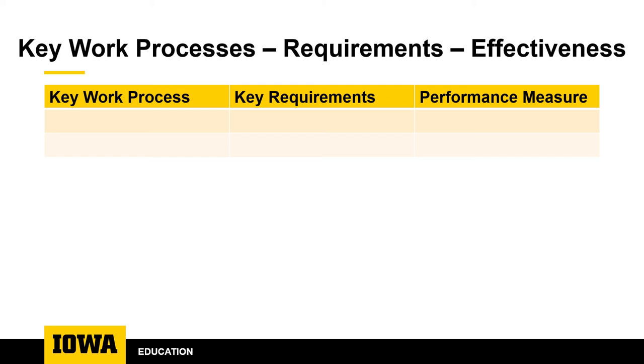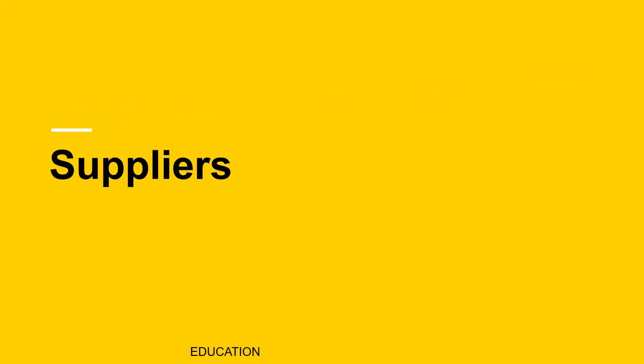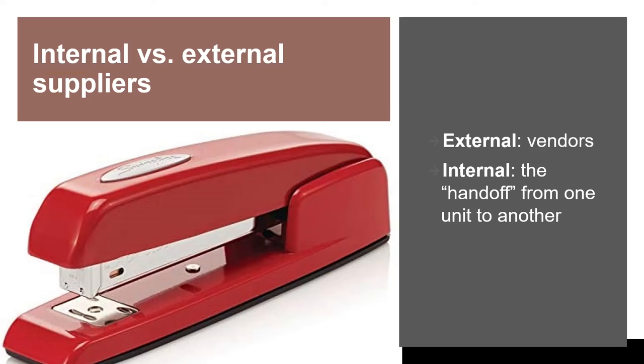Another important operational area to consider is your suppliers. For many units, an important component is the level of success they have in working with their suppliers. When I hear the word supplier, I first think of a stapler — I suppose it's the assumption that suppliers are external to my unit and provide consumable materials like paper, staples, and office chairs that are required for the success of my unit.